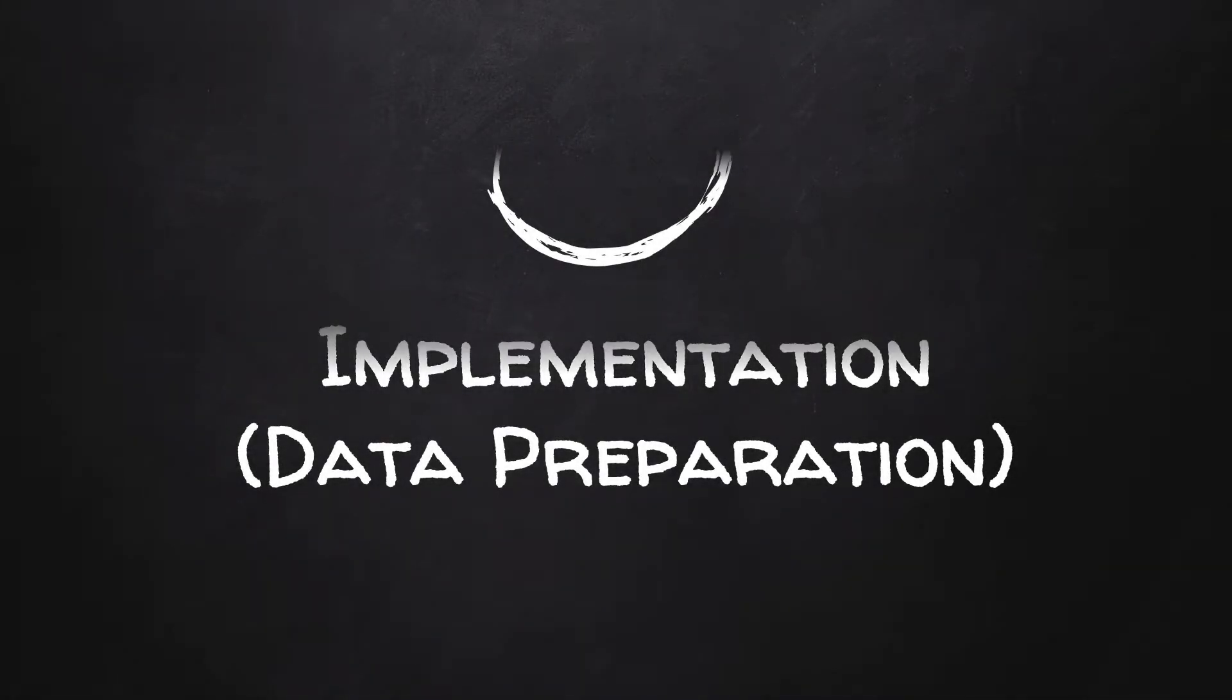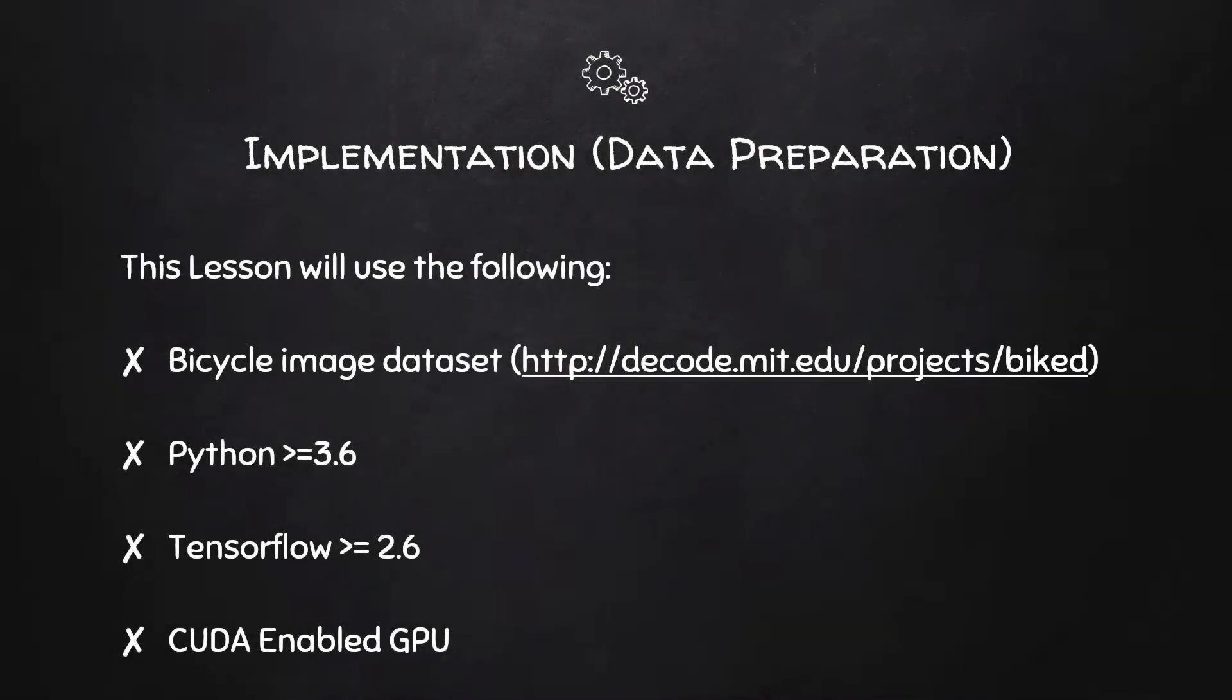Implementation. The implementation process is similar to our previous lessons, so if you would like to know more about the process, you can check out the other lessons in the series. We use Python 3 and TensorFlow 2 on a CUDA enabled GPU. For this lesson, we would use an open source image dataset which consists of images of bicycles.